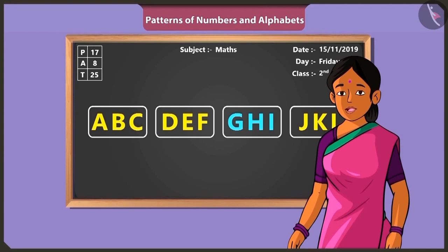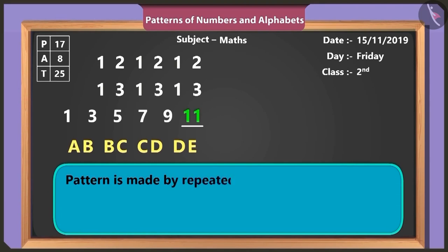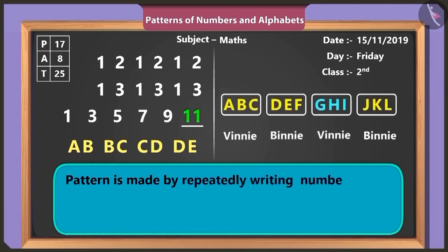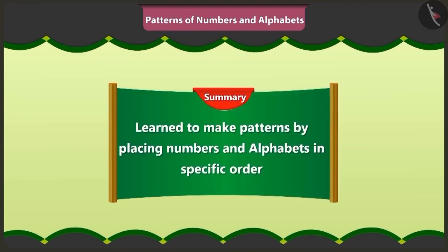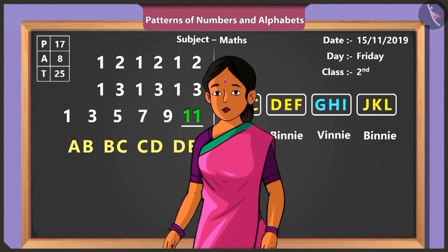Children, remember that a pattern is made by repeatedly writing numbers or alphabets in a specific order. Yes, ma'am. Friends, today you learned to make patterns by placing numbers and alphabets in a specific order in this video. In the next video, we will learn more about patterns made of numbers and alphabets with the help of some interesting examples.